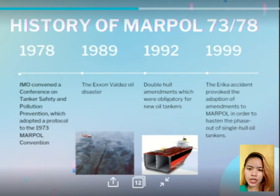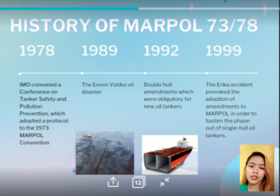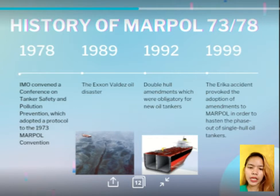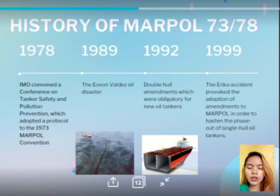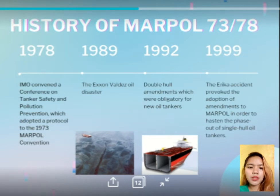Despite all the great efforts of MARPOL, another oil disaster happened in 1989 — the Exxon Valdez ran aground on Bligh Reef in Prince William Sound, spilling an estimated 250,000 barrels of crude oil. The spill covered more than 1,300 miles of coastline, of which more than 200 miles was heavily oiled, and many animals were affected by the oil spill.